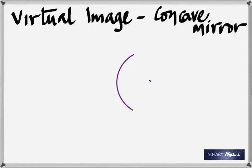What if the object is exactly at the focal point? The image will be at infinite distance. Because when the object was at infinite distance, the image was at F — so the reverse is also true. If you're listening, you simply get your answer: the image goes to infinity.